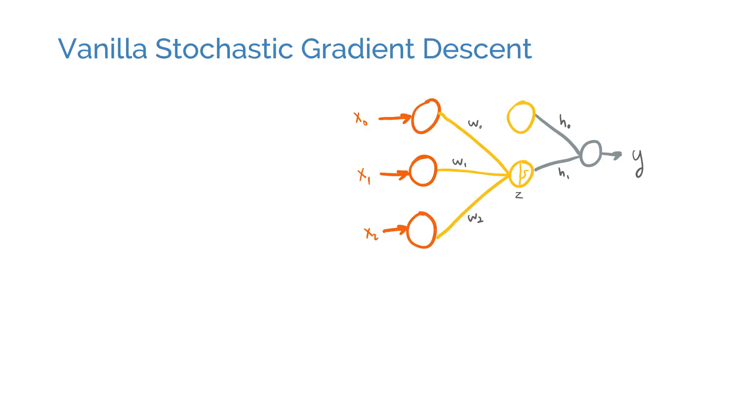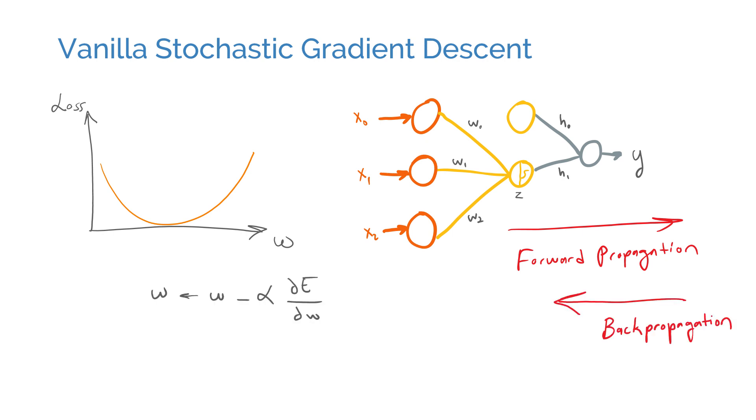We already talked about how optimization works in its simplest form in the earlier videos. We pick a loss function that we want to minimize, do a forward pass given a minibatch of inputs, take the derivative of the loss function with respect to the weights, update the weights, and iterate. This is how vanilla stochastic gradient descent works.